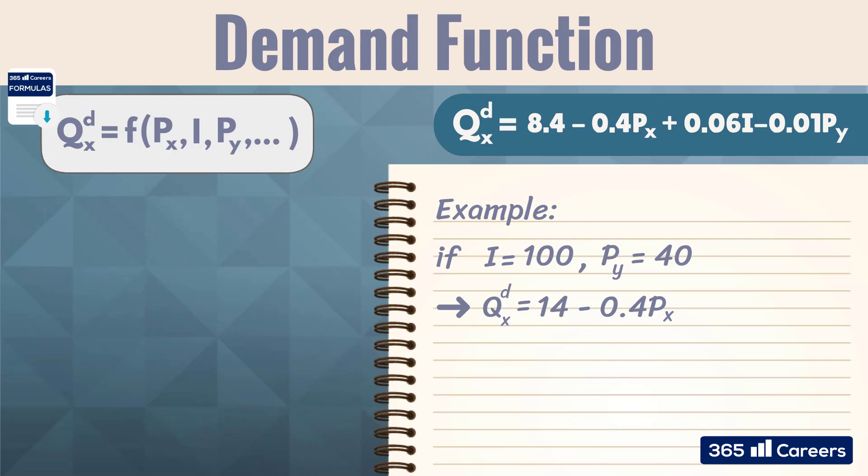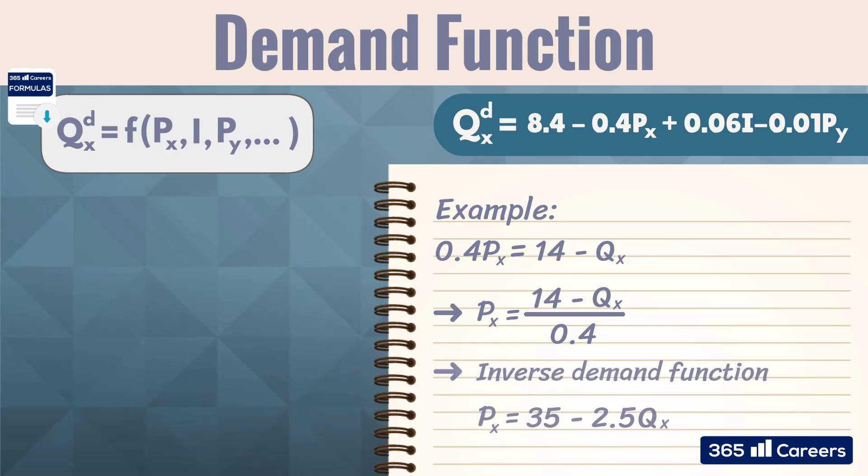Next, let's rearrange the equation so that it shows p of x in terms of q of x. Here is how it works. 0.4 p of x equals 14 minus q of x. Hence, p of x equals 14 minus q of x divided by 0.4. Hence, the inverse demand function p of x equals 35 minus 2.5 q of x.